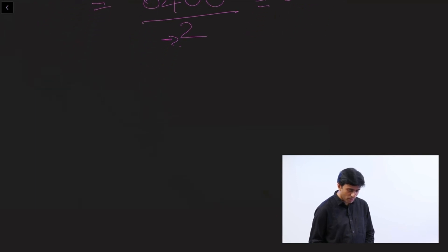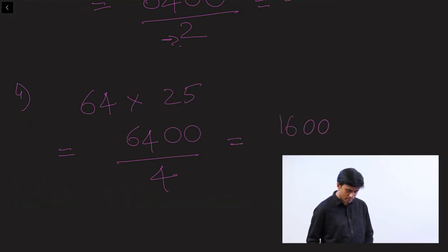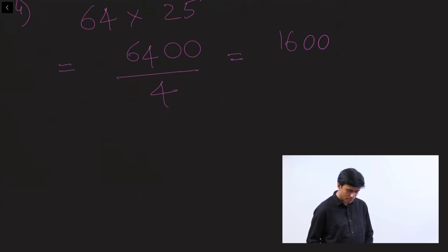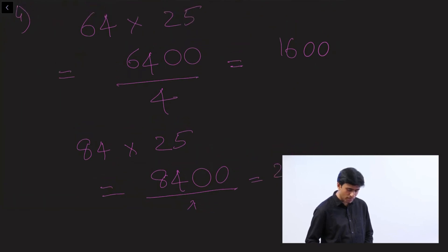To multiply a number by 25, place two zeros at the end and divide by 4. For example, 64 × 25 → 6,400 ÷ 4 = 1,600. Another example: 84 × 25 → 8,400 ÷ 4 = 2,100. Remember: add two zeros, then divide by 4.